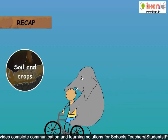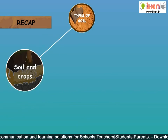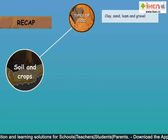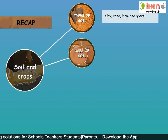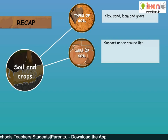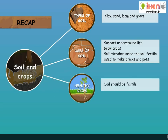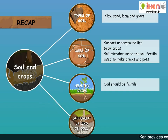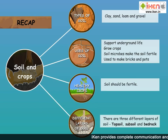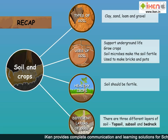Recap: Types of soil include clay, sand, loam, and gravel. Uses of soil include supporting underground life, growing crops, and making bricks and pots. Soil microbes make the soil fertile. Healthy crops need fertile soil. There are three different layers of soil: topsoil, subsoil, and bedrock.